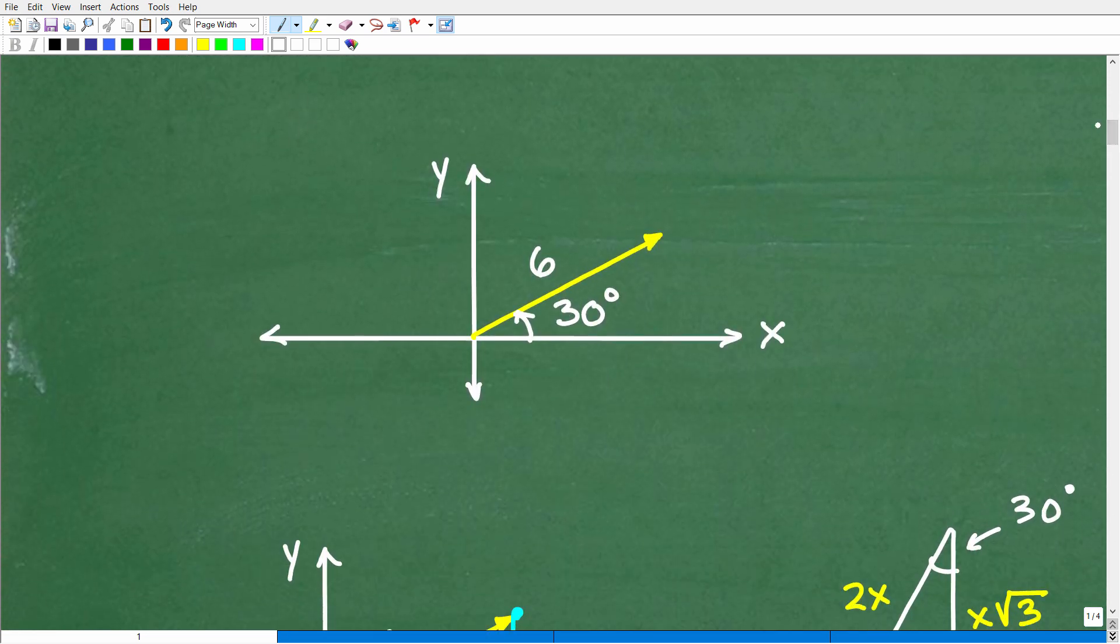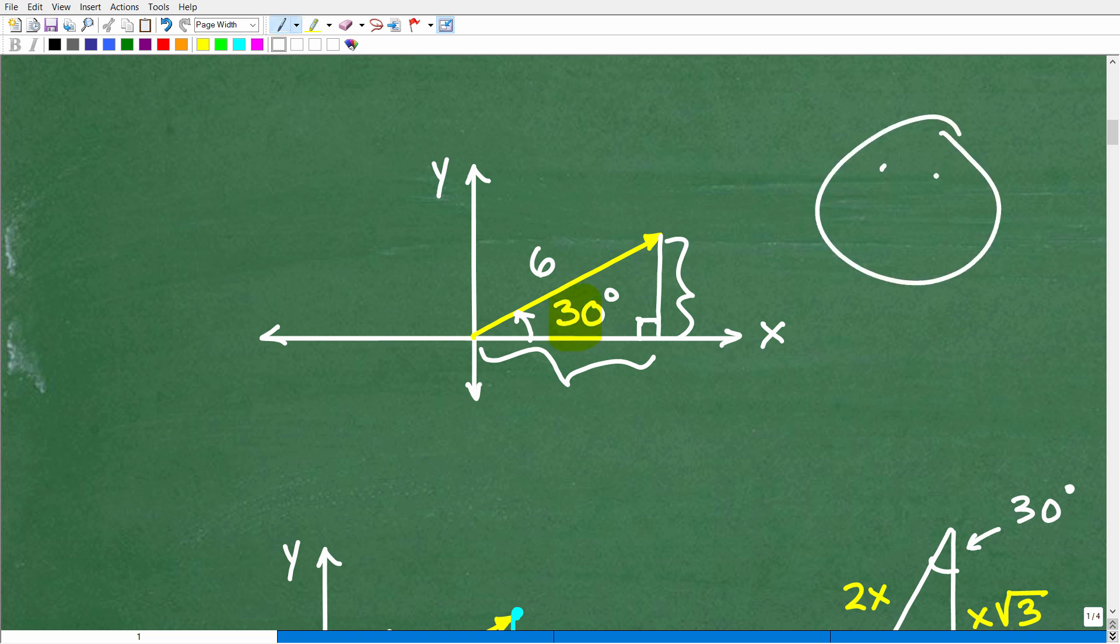I'm going to go ahead and get into the actual solution now. So again, here's our vector - 30 degrees, six is the length of this vector, emanating from the origin. We want to build ourselves a right triangle. We want to know this component right here and this component right there. You got a right triangle and you have 30 degrees in this right triangle.